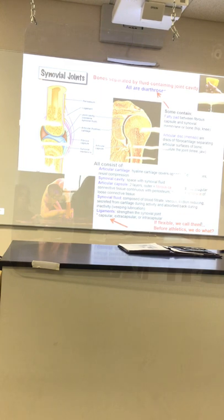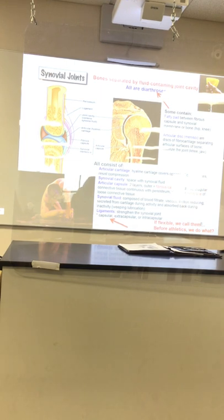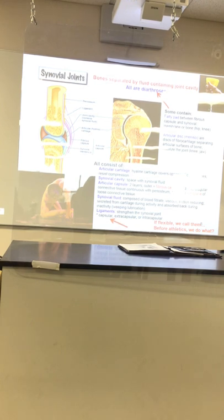There are also ligaments holding synovial joints together — ligaments connect bone to bone. Tendons, by comparison, connect muscle to bone. Let's talk about how these joints work — this system is referred to as weeping lubrication.